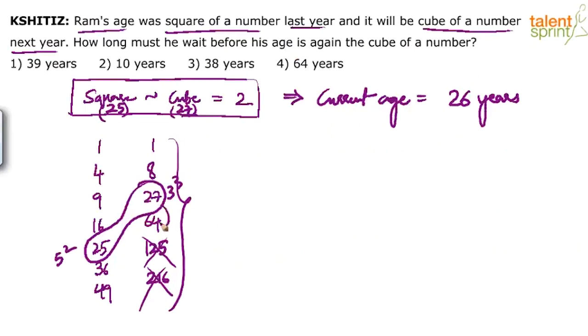After 27, the next cube will be at the age of 64. So, next cube will be 64. So, how long must he wait? The difference of these two.